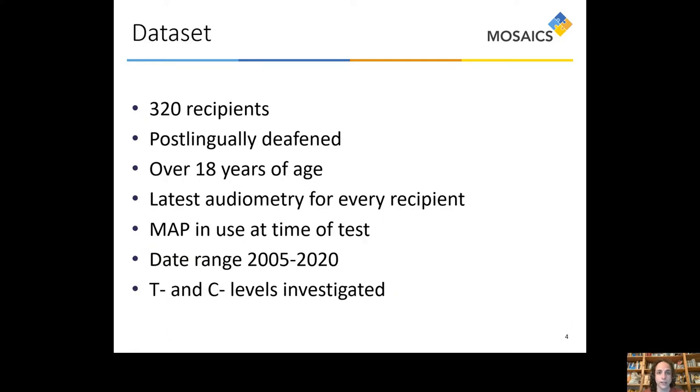Now, something about the dataset of the data study. This is data that was collected at the Radboud University Medical Center in Nijmegen, and it is a large dataset consisting of more than 80,000 records. However, it has been heavily filtered in order to get the data that we were looking for. We have selected 320 recipients, all postlingually deafened and all over 18 years of age, and we have selected for each of them the latest audiometry test that was on record. These were spanning a date range that goes from 2005 to 2020. For each audiometry test, we also included the map that was in use at the time, and we investigated T and C levels of that map.